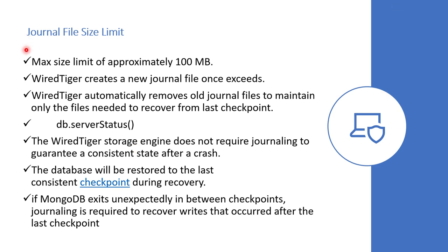A single journal file cannot go beyond 100 MB. Once that limit is reached, a new one is created. WiredTiger automatically removes old journal files once their data has already been written to the data files due to a checkpoint. If you want to check the complete status of your database, go to the mongo shell and run db.serverStatus().